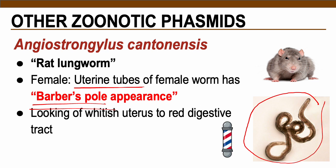These particular parasites appear white, with a whitish uterus and a red digestive tract.